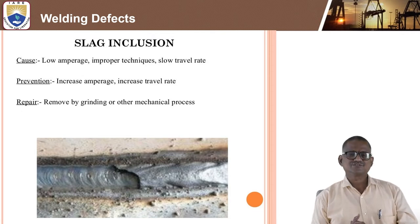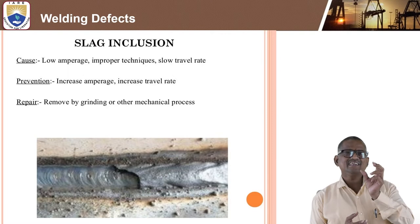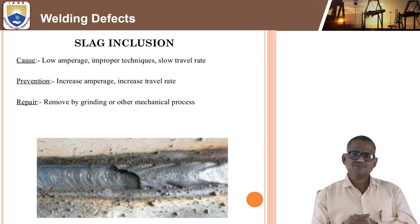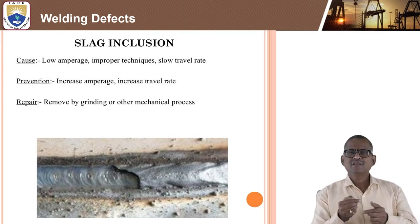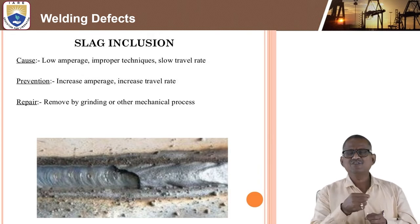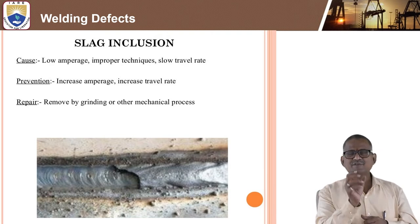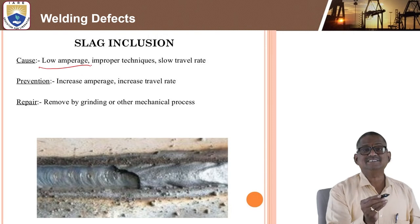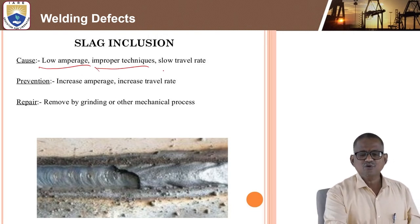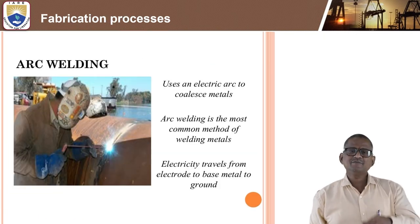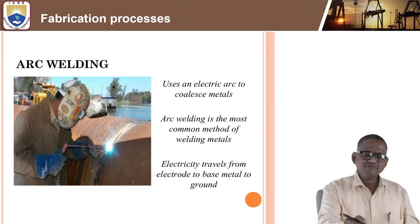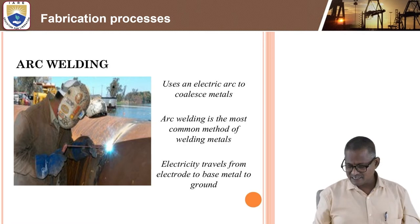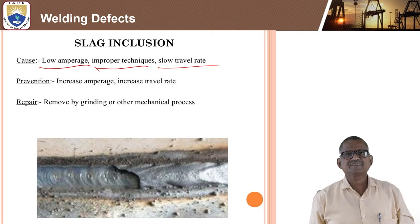The first defect is slag inclusion. This can be seen with the naked eye. While performing welding at high temperature, some metal coalesces and slag forms due to air particles or extra particles falling in, creating bubble-like formations. The main causes are low amperage, improper techniques, and slow travel rate. The expert welder must consider speed, torch positioning, and focus carefully.